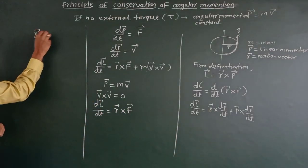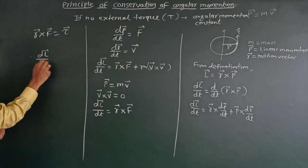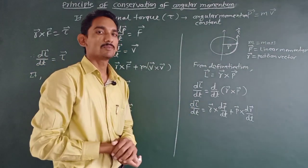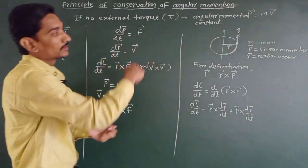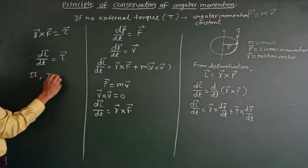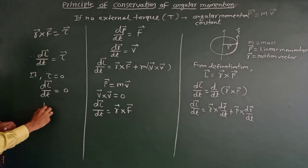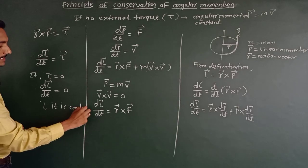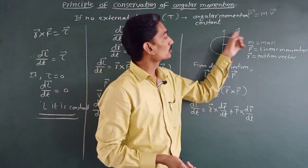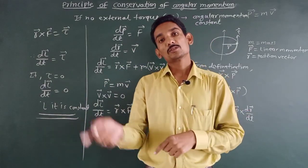We know that r vector cross F vector is nothing but the torque. So we can write: dL vector by dt equals torque. According to the principle of conservation of angular momentum, if the external torque acting on the body is zero, then dL vector by dt equals zero, and if it is zero then L is constant. So we can say that the angular momentum will be conserved when the external torque acting on the rotating body is zero. This proves the principle.